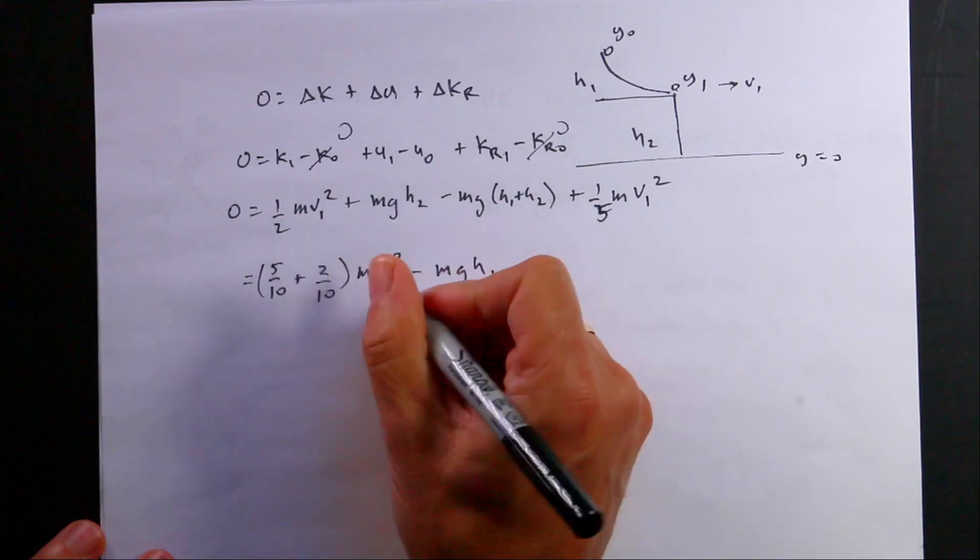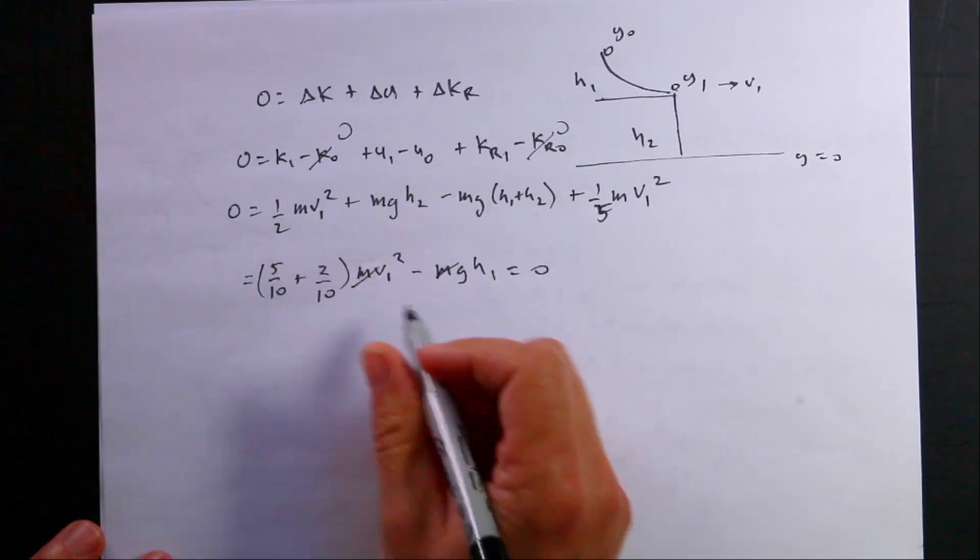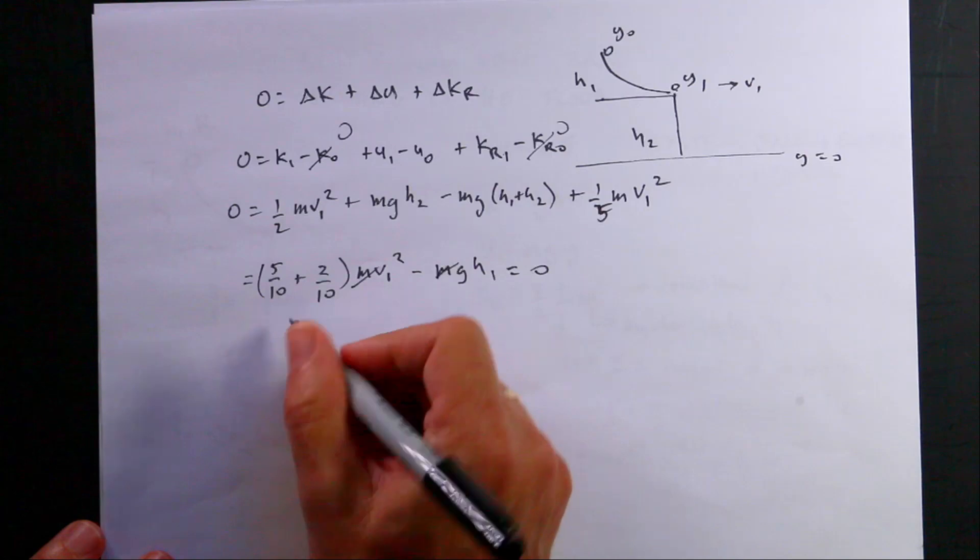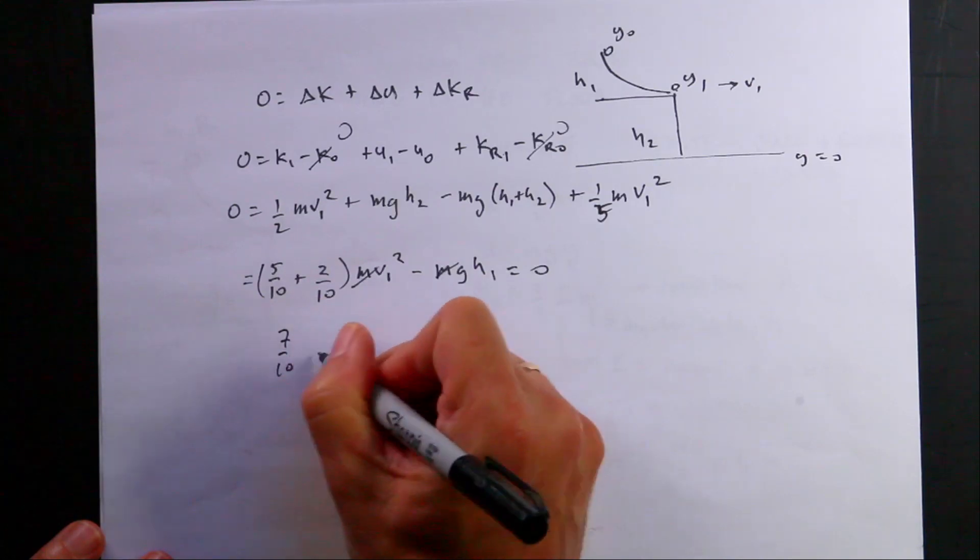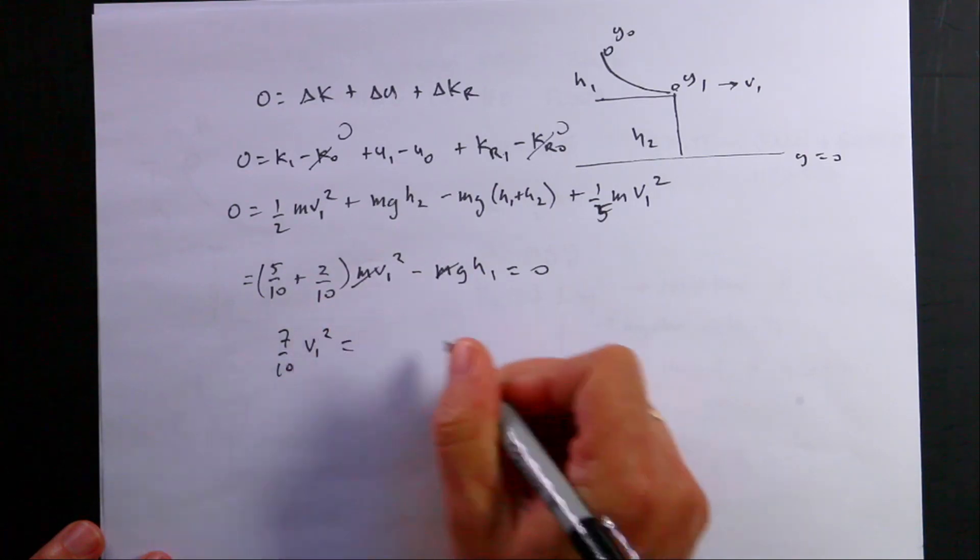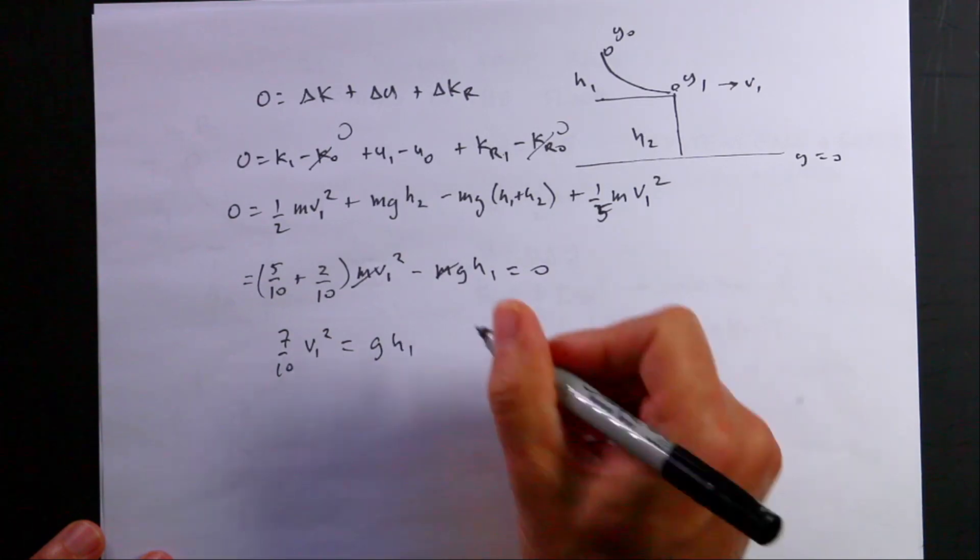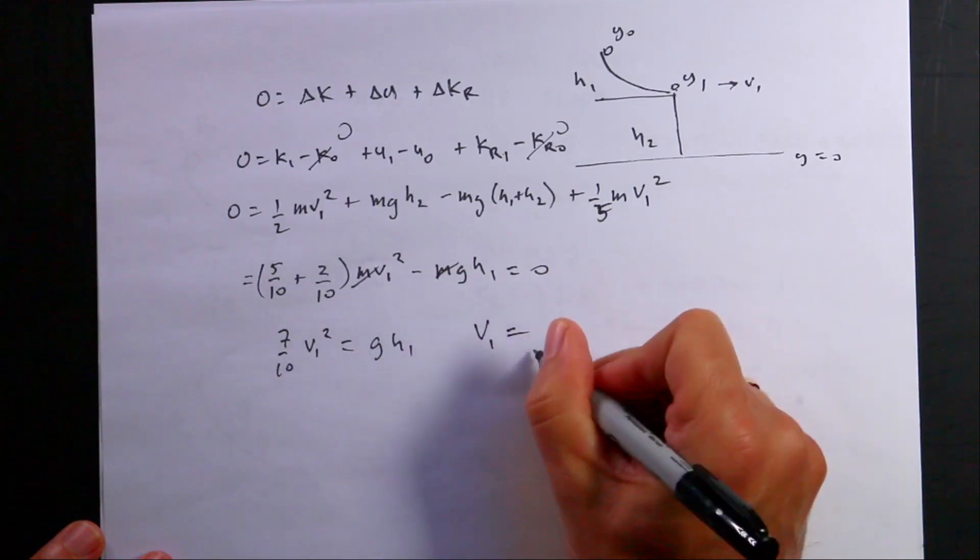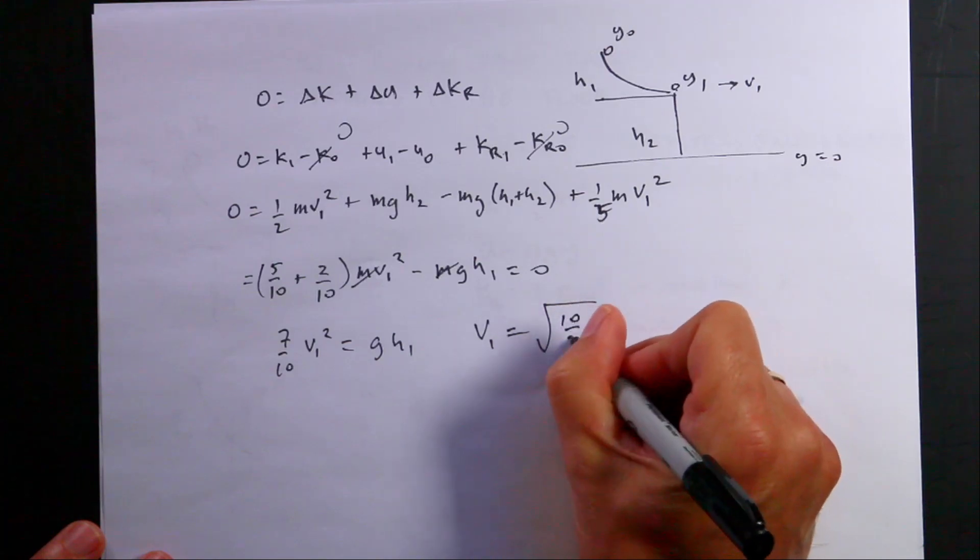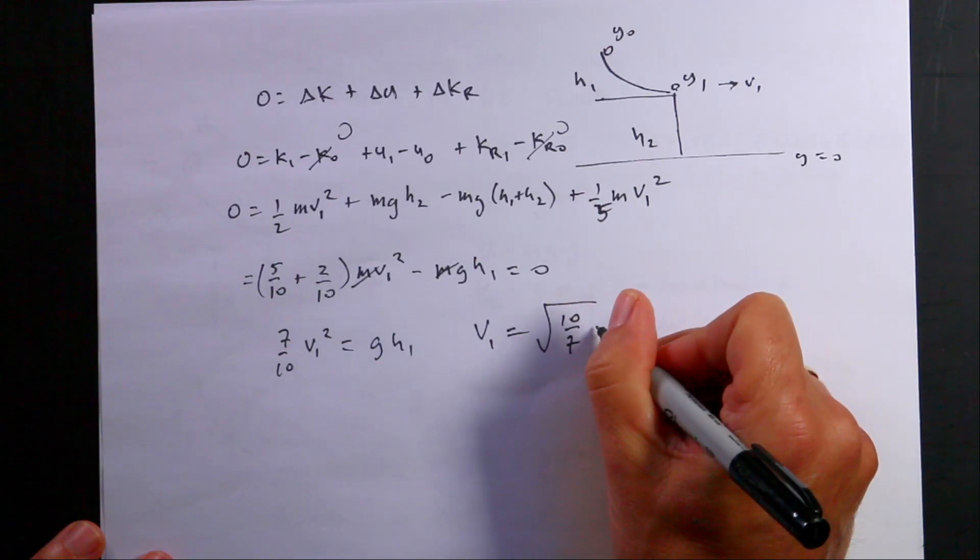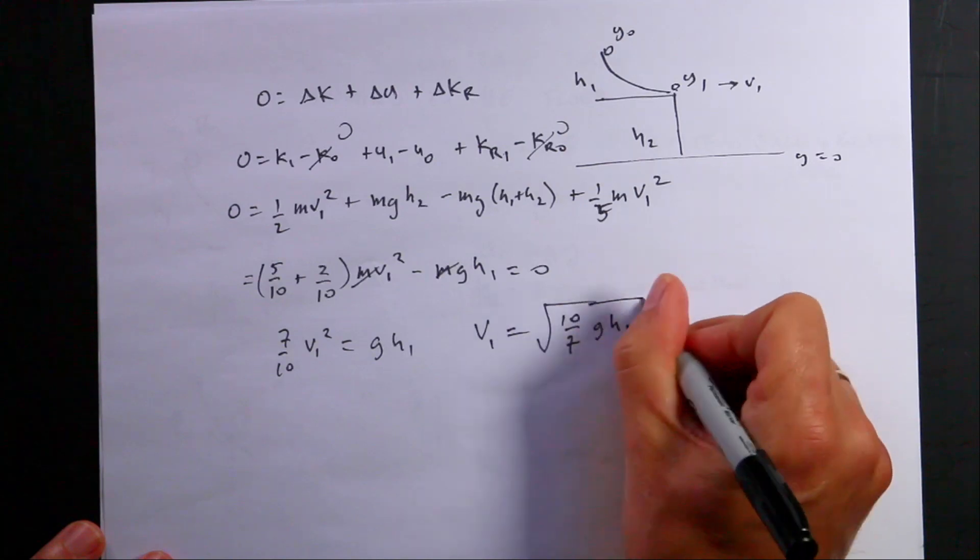I can divide both sides by the mass and add that to the other side. Combine these, I get 7 tenths v1 squared equals g h1. Now I can solve for v1. v1 is going to be the square root of ten-sevenths g h1.